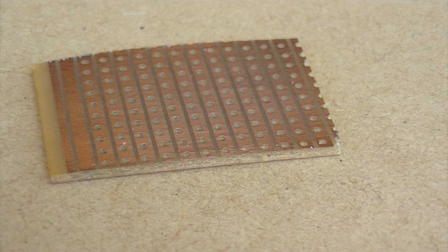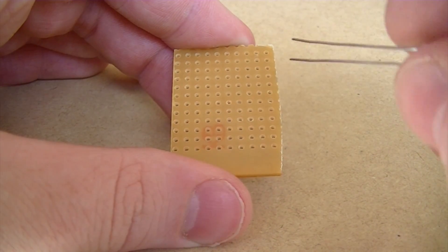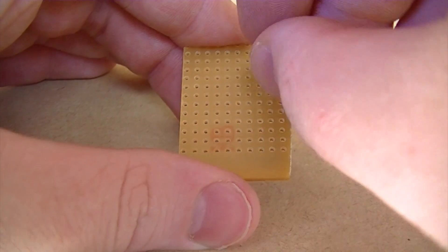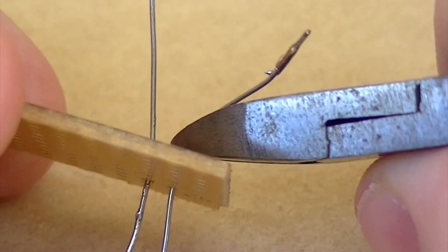First begin by scuffing off the copper traces on your Vero board with a piece of steel wool. Then position the LDR on the board like so. Then solder it in position and cut off the legs like so.